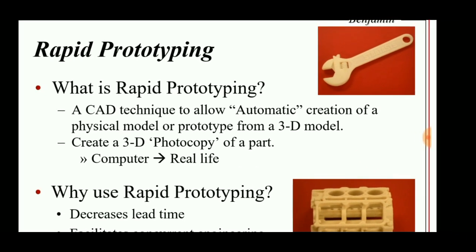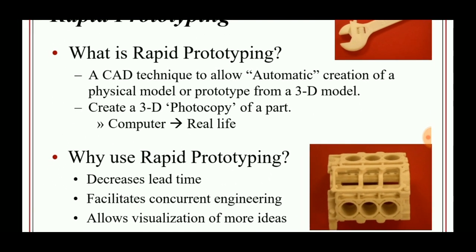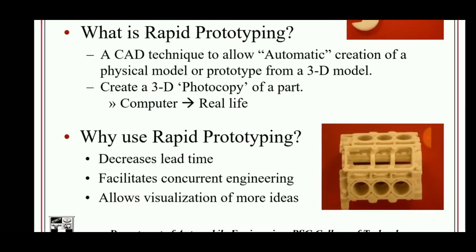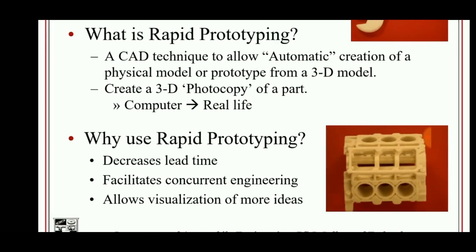It uses a machine called a rapid prototyping device that uses a series of mechanisms to develop a real-life product. First, a 3D model is created in software such as SolidWorks or CATIA, and it is converted into another 3D model format that is supported by the 3D printing machine, which then produces the real-life model.